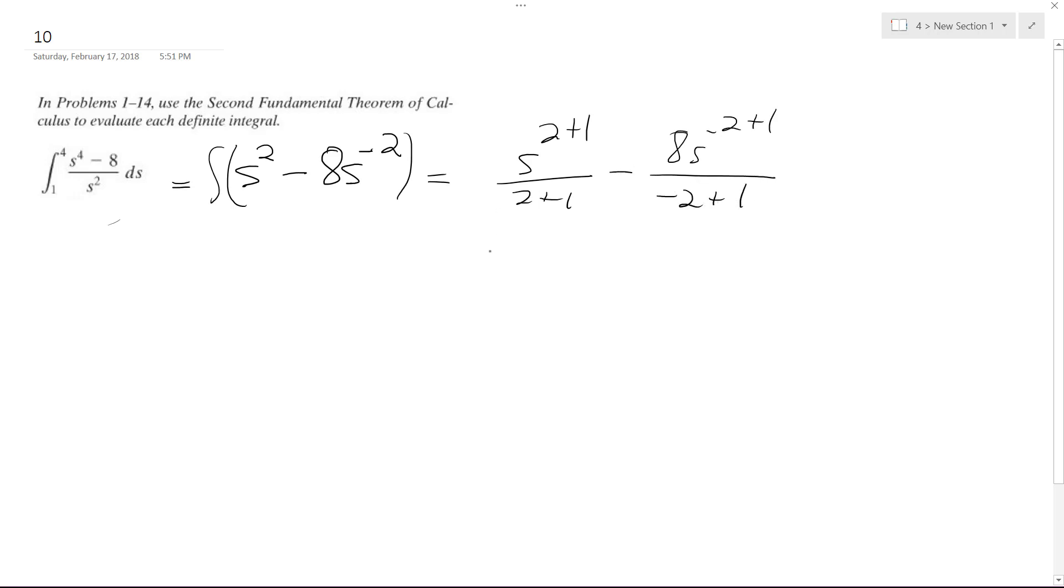So this ends up ultimately being s cubed over three plus, because we get the negative down here, this becomes negative two plus one is negative one, so this becomes plus. And we get eight s raised to the negative one over one. But in this case, we'll leave it like that. I'll actually write this down here because it's easier when you're multiplying.